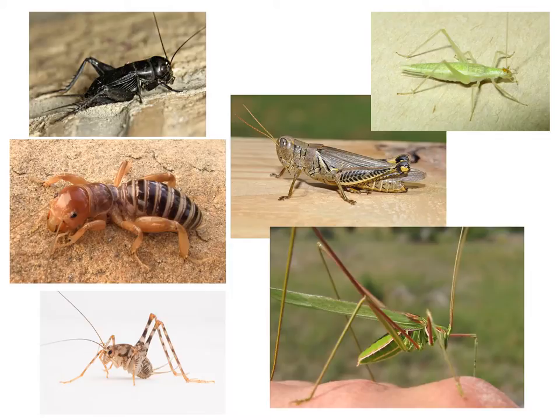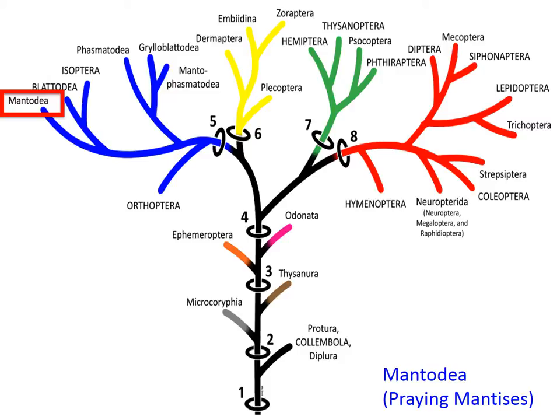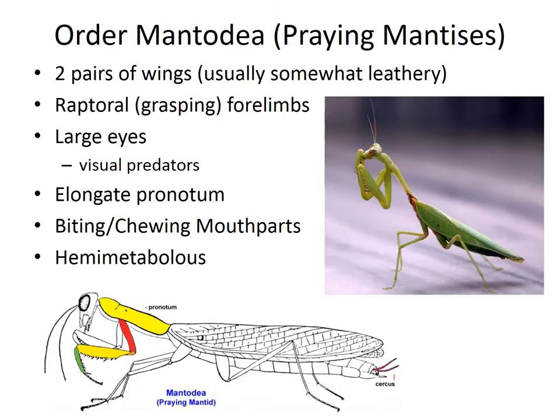And for reference, here is a smattering of different orthopterans. The next order we're going to talk about is another fairly familiar one, Mantodea, or praying mantises. The order Mantodea is characterized by a number of things as well. Like the orthopterans, they have two pairs of wings. Usually at least the front pair of these wings are somewhat leathery. They also have what are called raptoral forelimbs — these grasping forelimbs that are typical of a praying mantis.